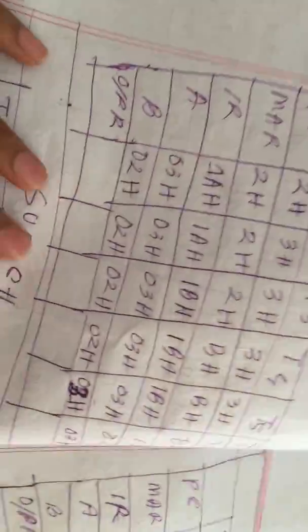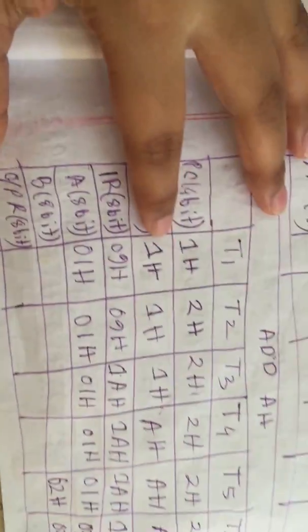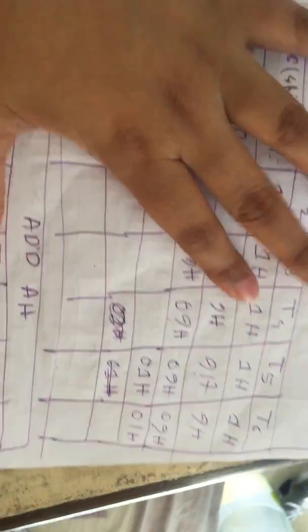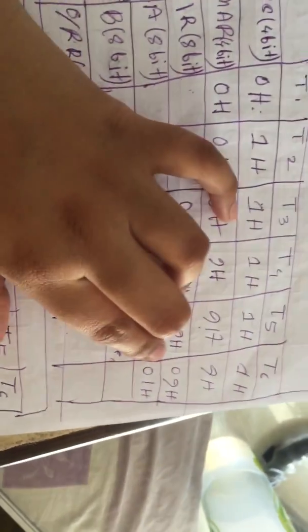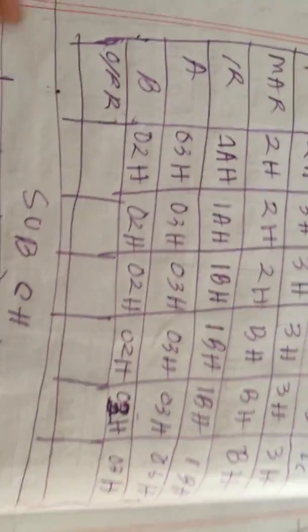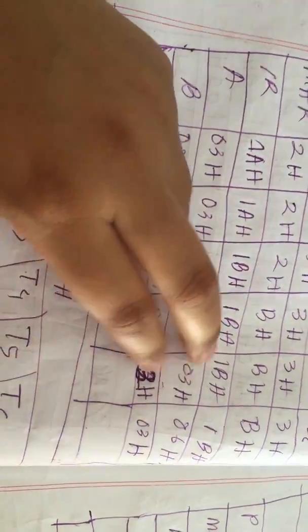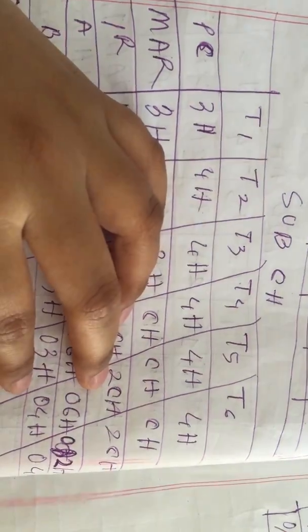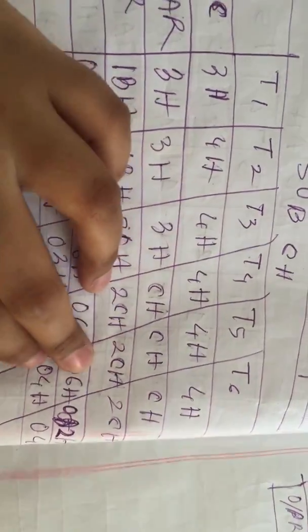One thing to note: after copying 1H to MAR, where do 09H and 01H come from? They are simply copied from the previous box — from the T6 cycle. Similarly for the next ADD operation, the values come from the previous box. By adding 03H and 03H we get 06H. For subtraction, the operation is very similar, and by subtracting we get 02H.